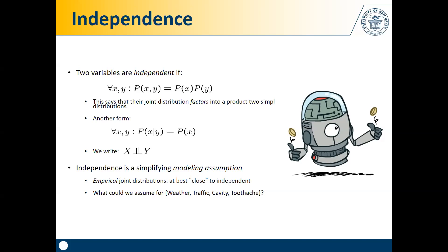Let's look at an example. What could we assume for the variables weather, traffic, cavity, and toothache? We can probably say that weather and traffic are related, and that cavity and toothache are related. What about traffic and cavity? There may be some cosmic relationship — some traffic in New Haven may have started a sequence of events resulting in a dental cavity — but the effect of traffic on getting a cavity can often be insignificant. So we can assume that traffic and toothache, and traffic and cavity, are independent variables.